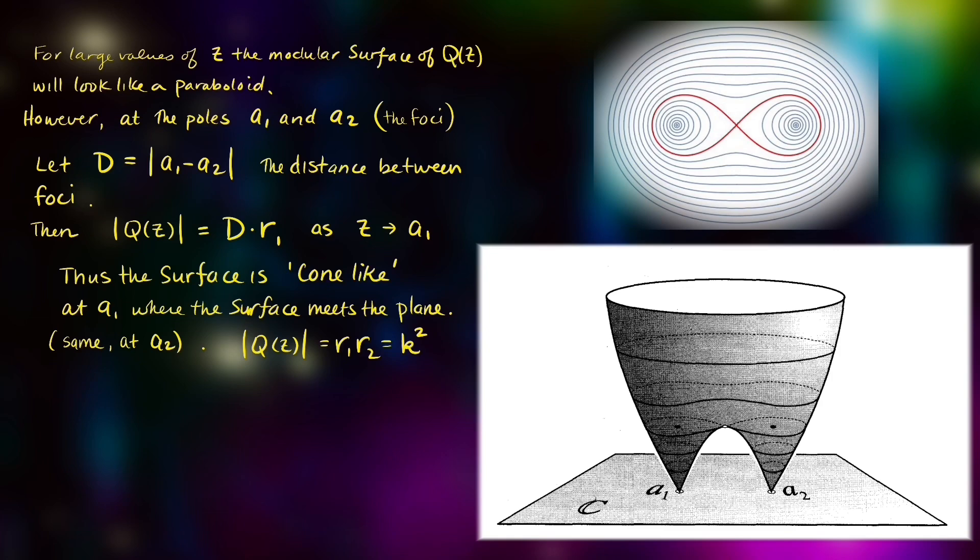And so you can see cross-sectional cuts of this modular surface create what we know to be our Cassinian family of curves.